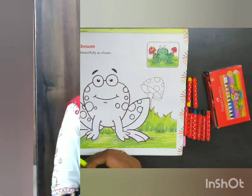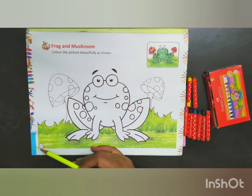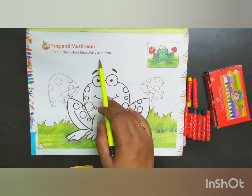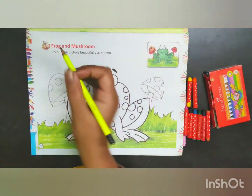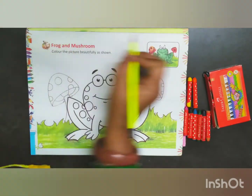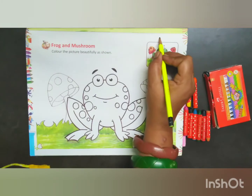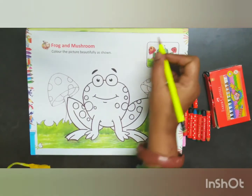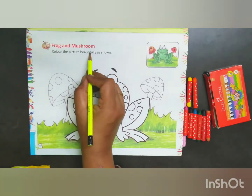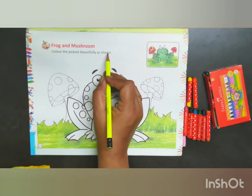Let's start. Today we will be doing page number 11, frog and mushroom. So first write down date and classwork. Color the picture beautifully as shown.